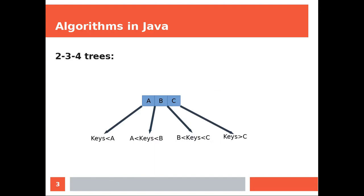Let's have a look at the children and how to organize them. All children with keys less than A will get the leftmost position. Then you get all children with keys bigger than A but smaller than B, then all keys bigger than B and smaller than C, and then all keys bigger than C.